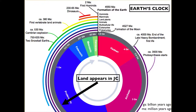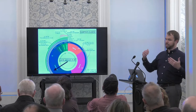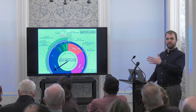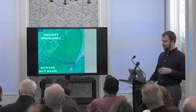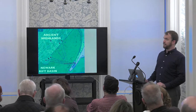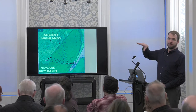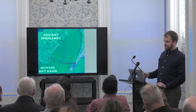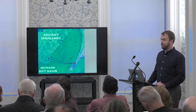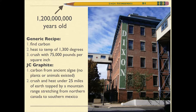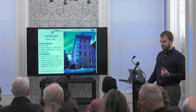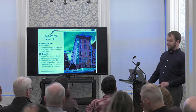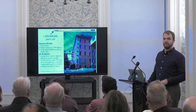Jersey City starts right around when we think part of Brazil collided with the coastline of North America, causing a mountain range to start stretching from Canada to southern Mexico. The exposed rocks in the highlands of Jersey City are 1.5 billion years old — they've been eroding since then. In those exposed rocks are certain deposits of graphite, which is famous in Jersey City because of Dixon Ticonderoga pencils.